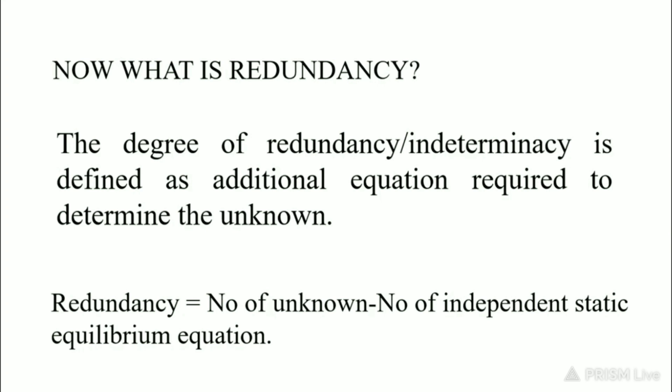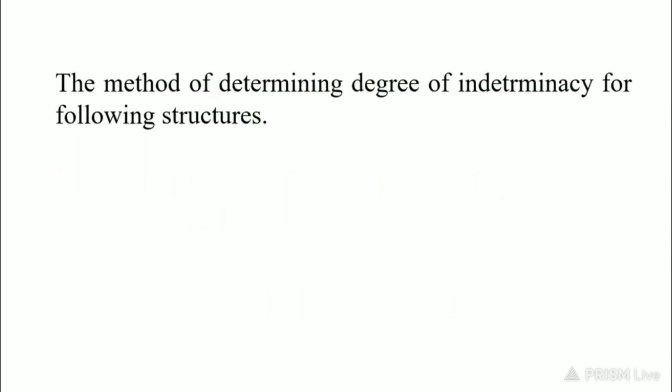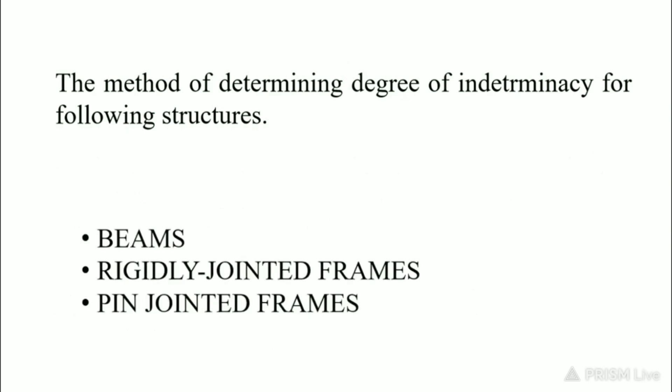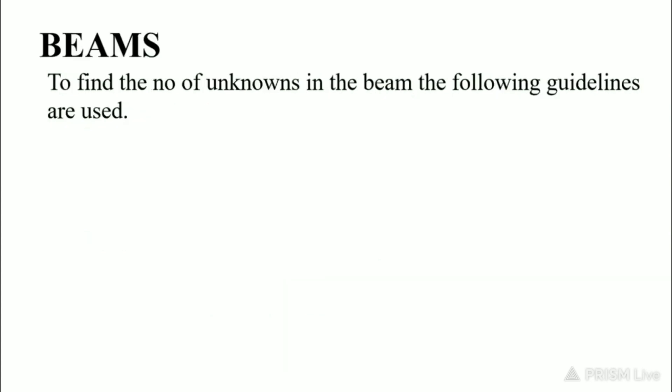The number of independent static equilibrium equations is 3 for most cases like beams, trusses, and frames. We will determine the degree of indeterminacy for three types of structures: first, beams; second, rigidly jointed frames; and third, pin jointed frames.